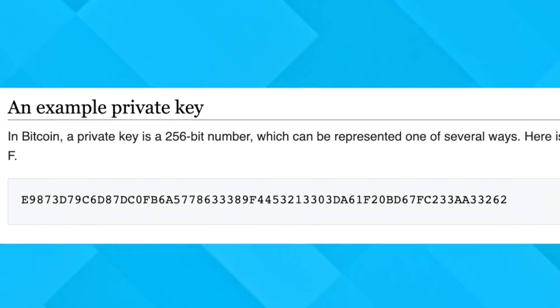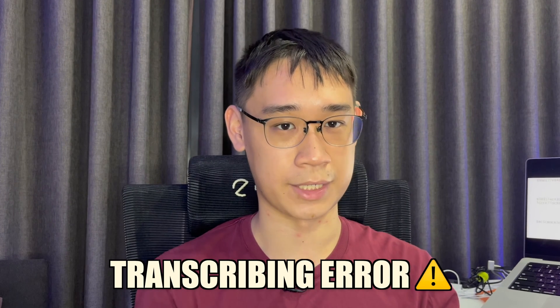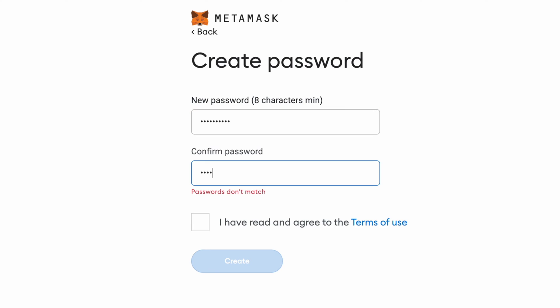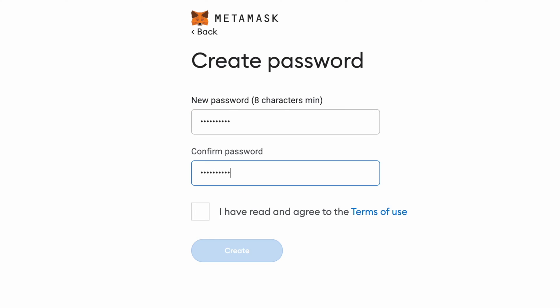The main problem with a private key is that it contains a long string of letters and numbers. This can be extremely hard for someone to write down, and the chances of a transcribing error are very high. You may notice that when performing transactions using a hot wallet like Metamask, you are not required to enter your private key to sign every transaction. Instead, you use a password to unlock your Metamask wallet, and you will be able to sign any transactions after you have unlocked it.